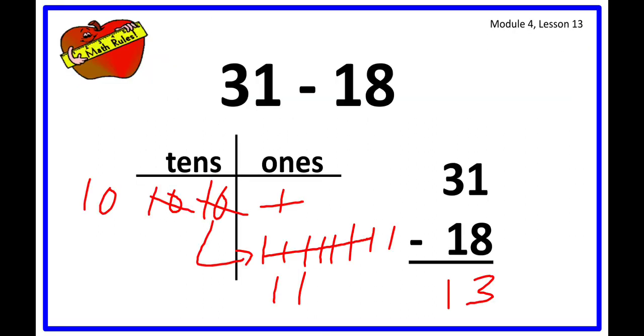Now let's come to our drawings. Here's a vertical form, we have a place value chart also: 31 minus 18. We represent our 31 in the chart.